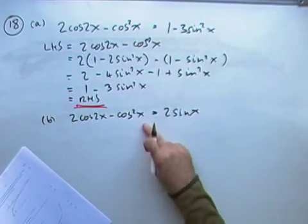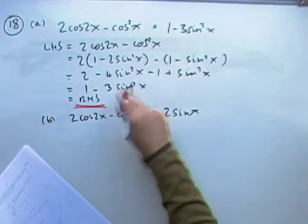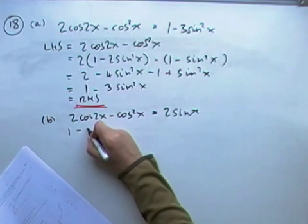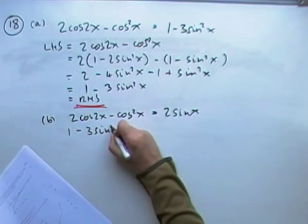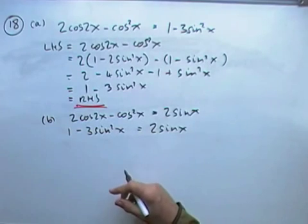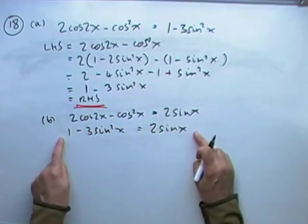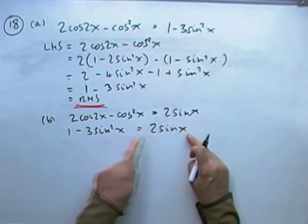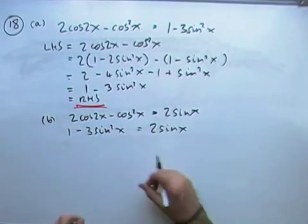Now, unless you're a goldfish, you'll remember that. There it was. So I can replace it with 1 minus 3 sine squared x equals 2sinx. And that's instantly recognisable as a quadratic. I've got a squared term, a term on its own, and a numerical term.